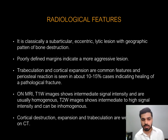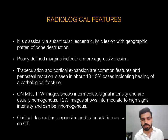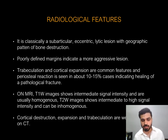Regarding radiological features, GCT is classically a subarticular eccentric lytic lesion with a geographic pattern of bone destruction. Poorly defined margins indicate a more aggressive lesion. Trabeculation and cortical expansion are common features, and periosteal reaction is seen in about 10–15% of cases, indicating healing of a pathological fracture.